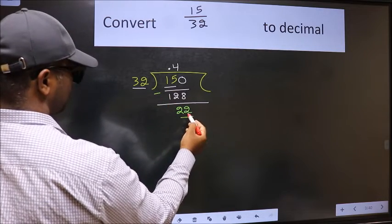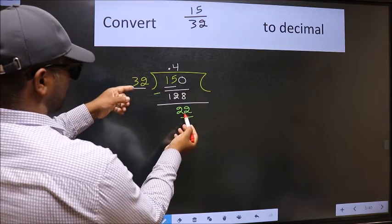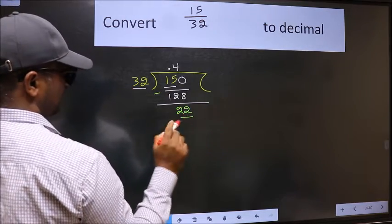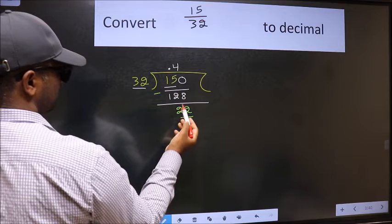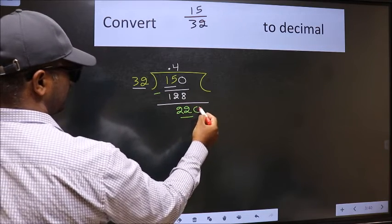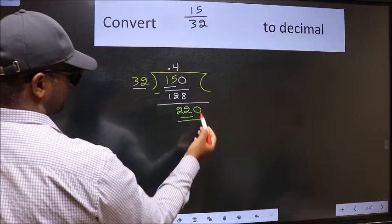Now here we have 22 and here 32. 22 is smaller than 32. And we already have the decimal. So we can directly take 0. So 220.